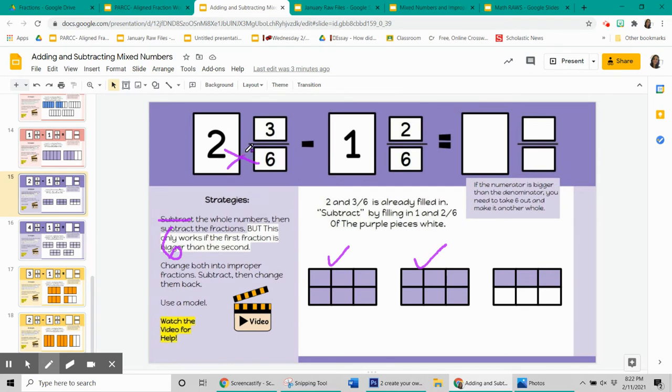2 times 6, because each whole is 6 pieces, plus 3. 2 times 6 is 12, plus 3 is 15. So our first fraction is 15 sixths.